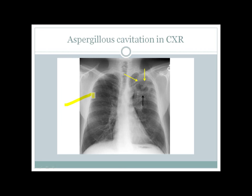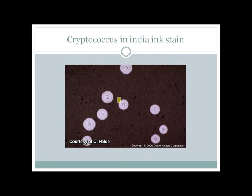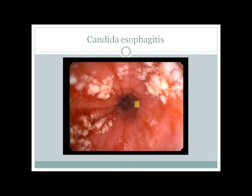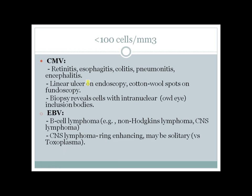Here is a chest X-ray of a patient with very low CD4 count showing a cavity in the left upper lobe — this is due to Aspergillus cavitation. The patient can also have infiltrates due to Aspergillus infection. Here you can see an India ink stain from a CSF sample showing the very thick capsule of Cryptococcus neoformans. Here is an endoscopy of an HIV patient with very low CD4 showing white patches over the esophagus — these are features of Candida esophagitis.